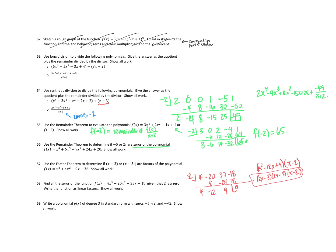Write a polynomial P of x of degree 3 in standard form with zeros 5, negative square root of 2, and square root of 2. So I need a cubic, so it needs to have x plus 5 as a factor, x plus square root of 2 as a factor, and x minus square root of 2 as a factor. When I multiply those out, these two are a difference of squares, so it's going to multiply into x squared minus 2. Now I'm going to multiply that out: x times x squared to get x cubed, x times minus 2 to get minus 2x, x squared times 5 to get 5x squared, and 5 times minus 2 to get minus 10. So if I write that in descending order, it gives me x cubed plus 5x squared minus 2x minus 10.